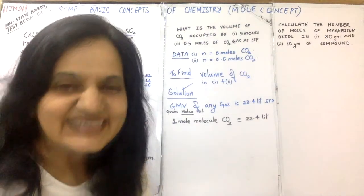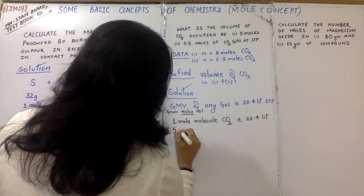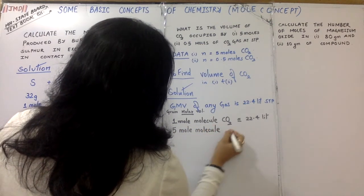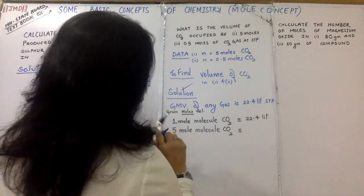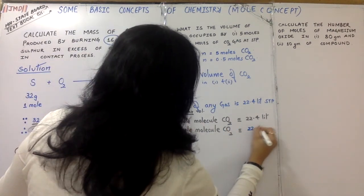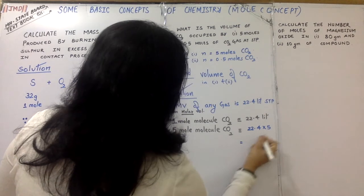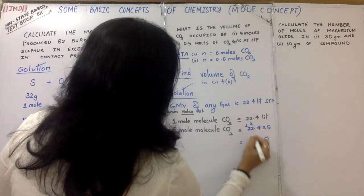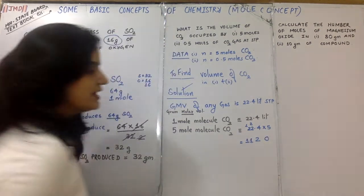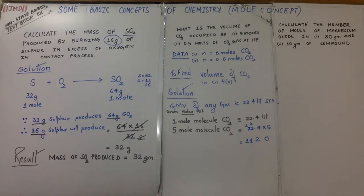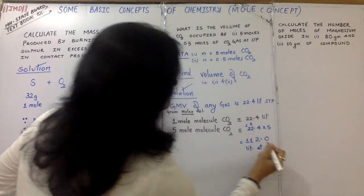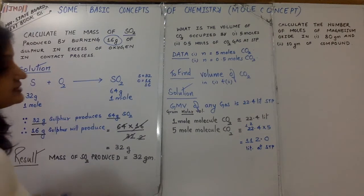So 1 mole is 22.4 liters, therefore 5 moles will be 112.0 liters at STP.